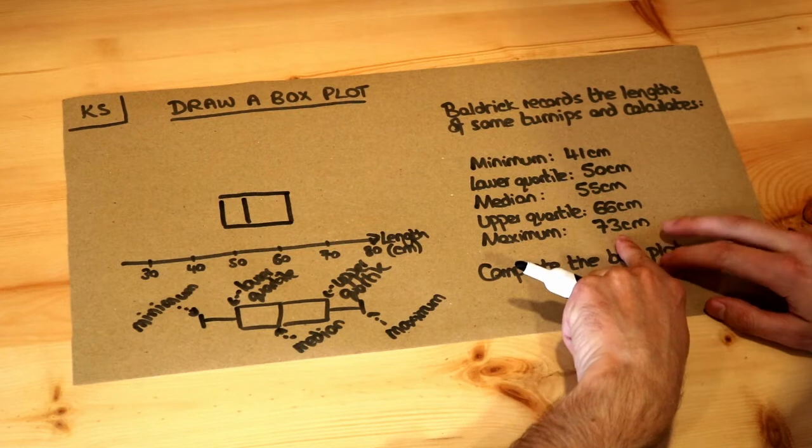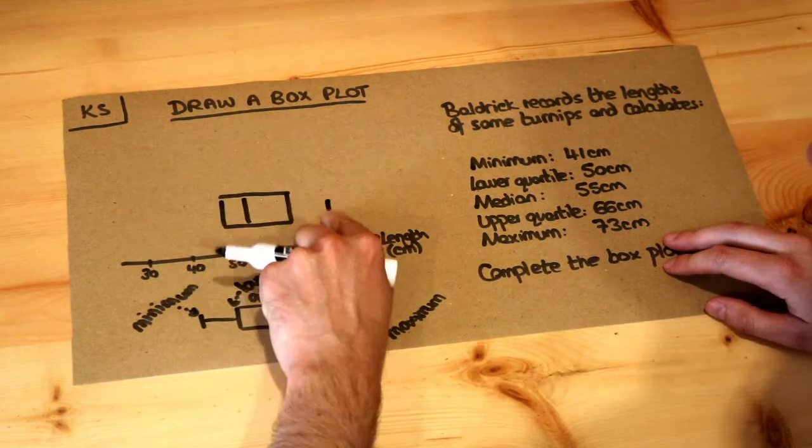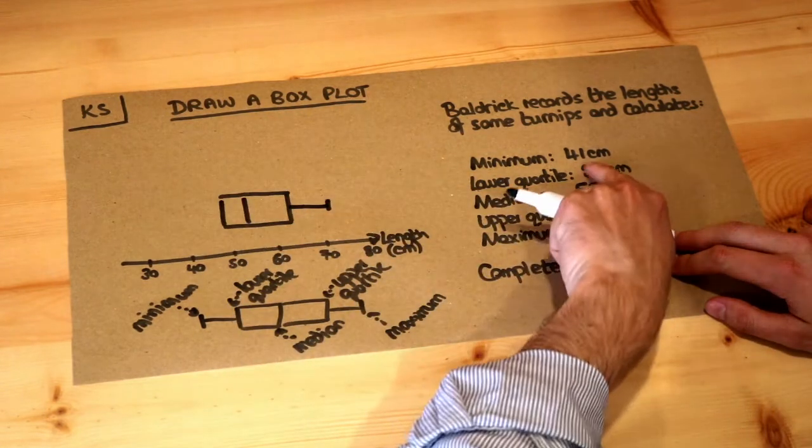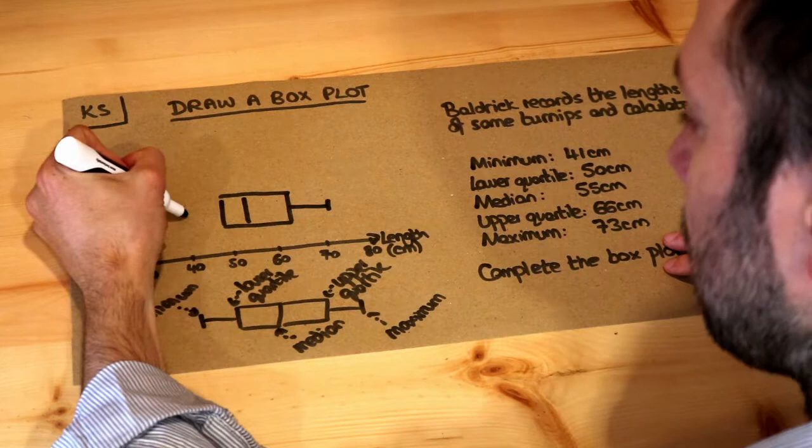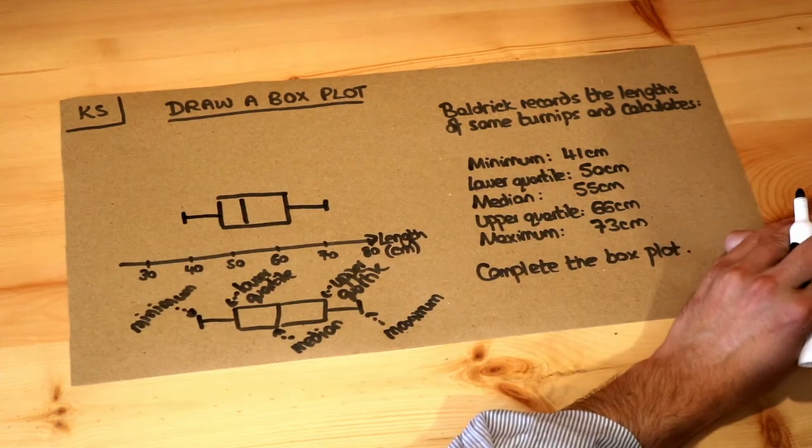And then we want the whiskers. So the maximum length of turnip is 73 centimeters, so 73 is here, so we do a little vertical strike and then join it up. And then the minimum length of turnip is 41, so let's put that here and then we join. Box plot.